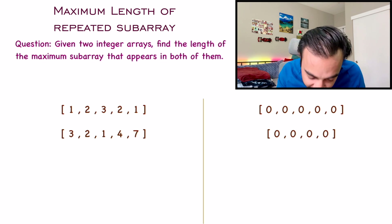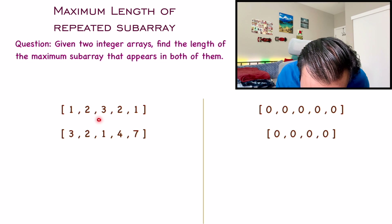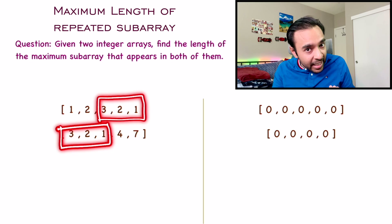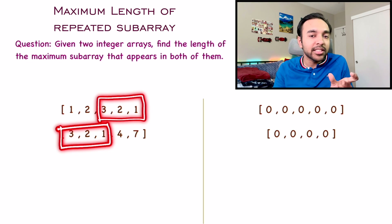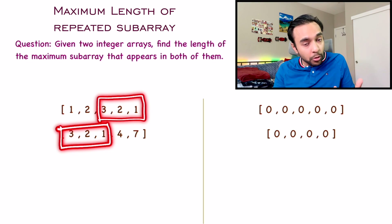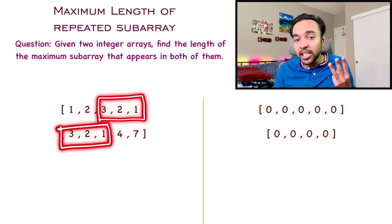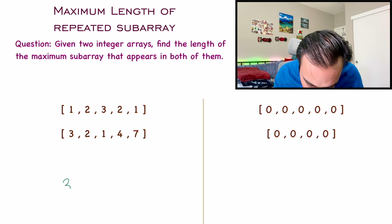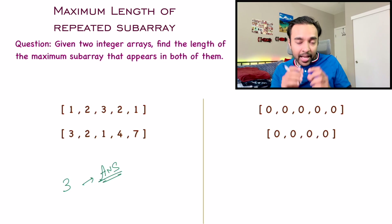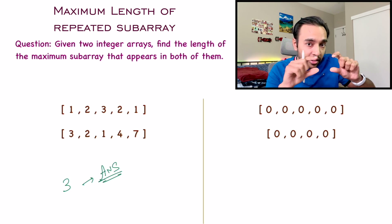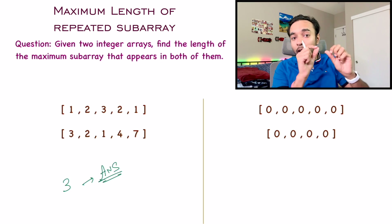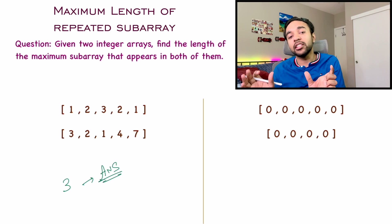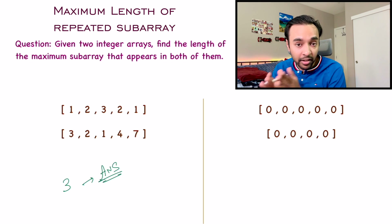If you notice, these two arrays have this subarray — 3, 2, 1 — in common. And in fact, this is the longest subarray that you can find, so its length is 3. For your first test case, you need to return 3 as your answer. It is also important that when you are selecting these elements, all of them have to be contiguous — they must appear one after the other and you cannot skip an element.